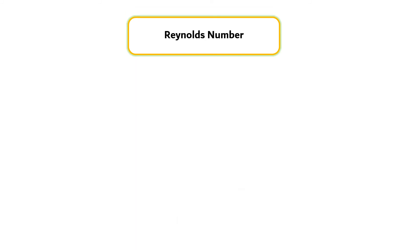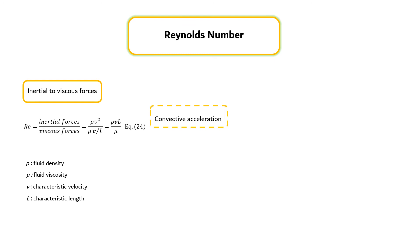Reynolds number. The type of flow, whether laminar or turbulent, can be determined by computing the ratio of inertial to viscous forces, known as the Reynolds number. As shown in the equation, inertial forces arise from the convective acceleration of fluid and are proportional to rho v squared with units of forces per unit area. Viscous force per unit area can be represented by the viscous shear stress, which for a Newtonian fluid is proportional to mu v per L.